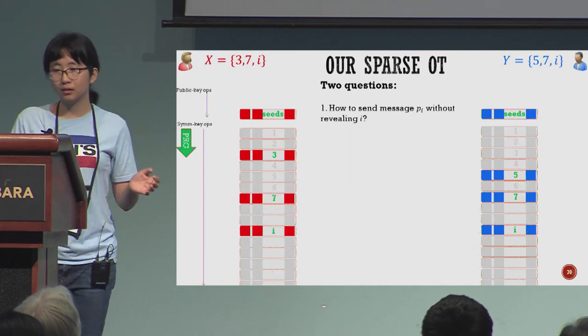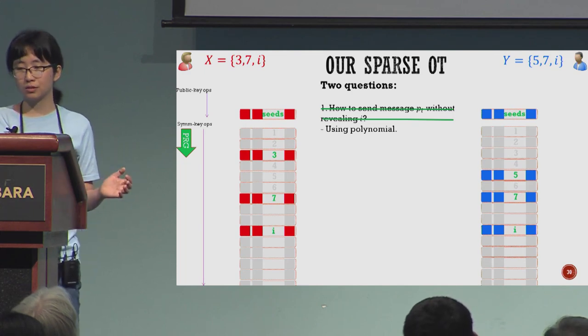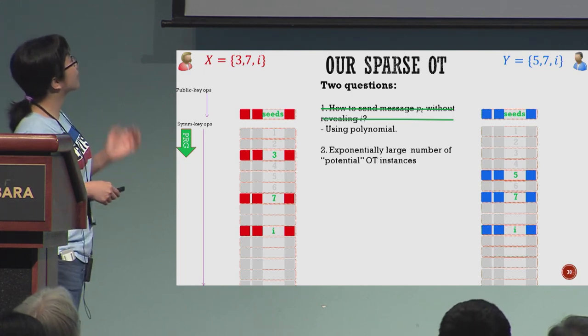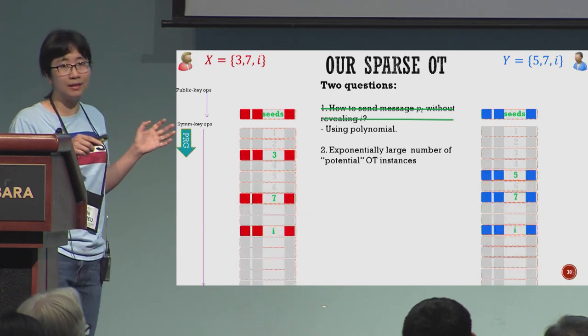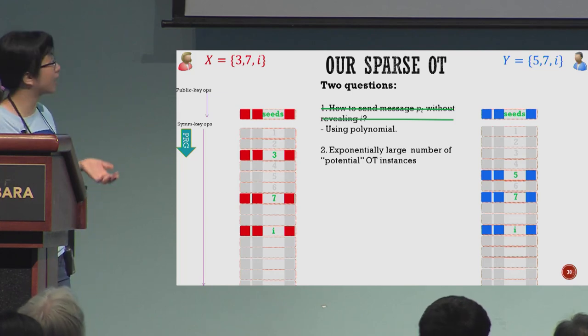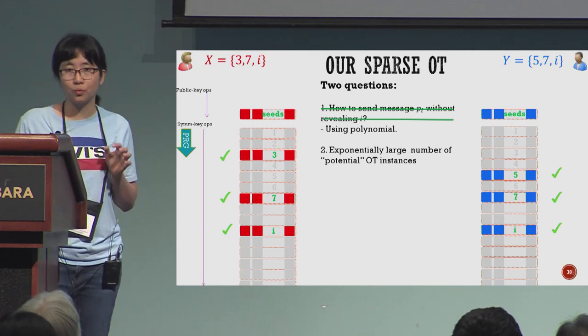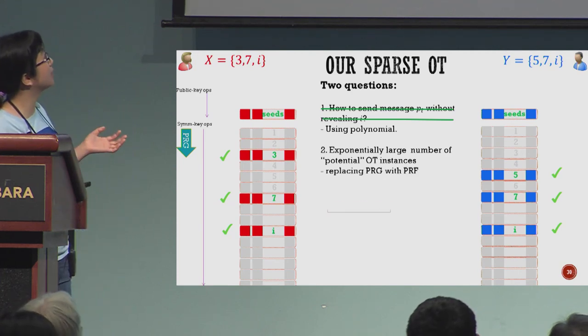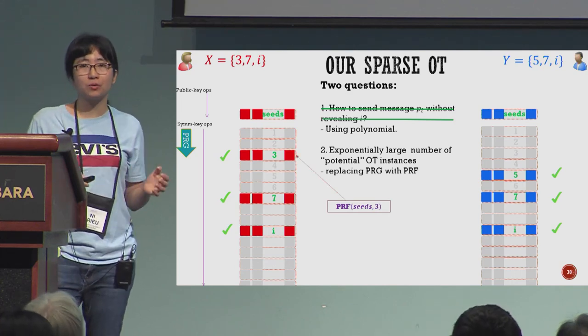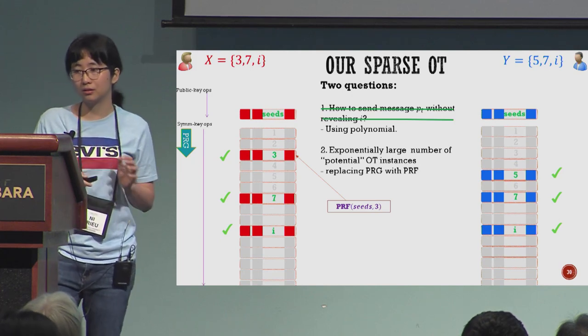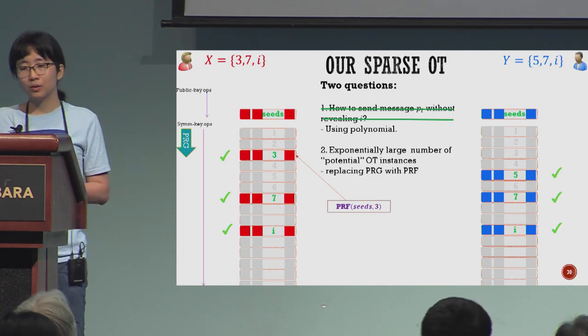So we are done with the first question using polynomials. Now going to the second question: recall that both parties have to use PRG to extend their seed to many values, however we only care about some of them. A very simple solution is we replace PRG with PRF, and we have several tricks to compute this PRF efficiently. You can see the paper for how to do it.